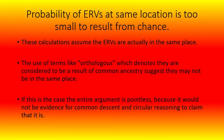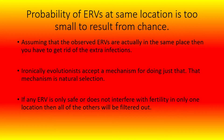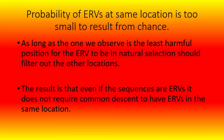These calculations assume the ERVs are actually in the same place. The use of terms like 'orthologous,' which denotes they are considered to be a result of common ancestry, suggests they may not be in the same place. If this is the case, the entire argument is pointless because it would not be evidence for common descent and would be circular reasoning to claim that it is. Ironically, evolutionists accept a mechanism for filtering out extra infections: natural selection. If any ERV is only safe in one location, then all of the others will be filtered out, meaning even if the sequences are ERVs, it does not require common descent to have ERVs in the same location.